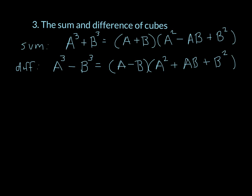The last special formulas are the sum and difference of cubes. If you have a cubed plus b cubed, that is a plus b times a squared minus ab plus b squared. And if you have a cubed minus b cubed, that is a minus b times a squared plus ab plus b squared.